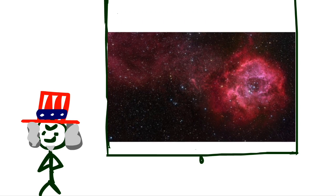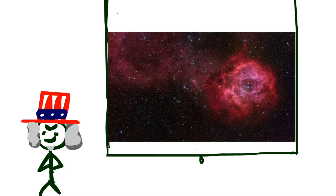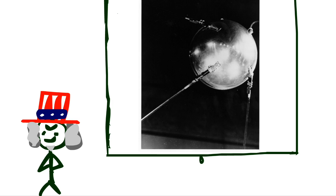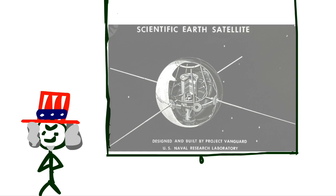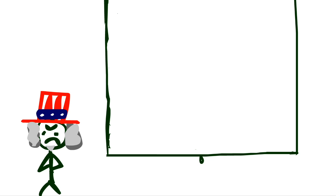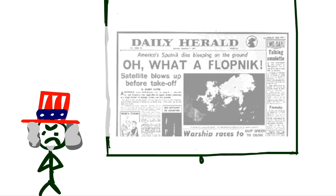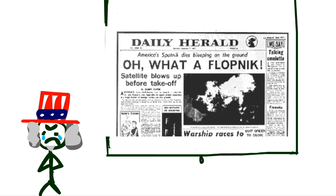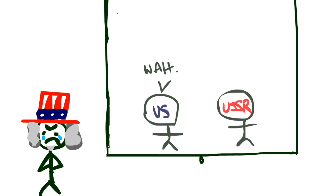In response to Sputnik 1 and 2, the United States, threatened by the Soviet's advantage, launched the Vanguard test satellite in December 1957. Whereas the Sputnik launches were a great success, the televised Vanguard launch was a spectacular failure, leading to newspaper headlines such as Flotnik and Kaputnik. Yes, this was an elementary school playground arms race.